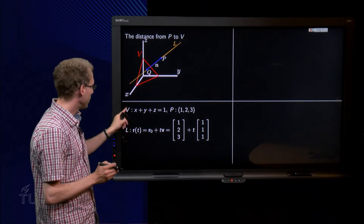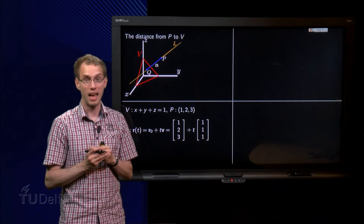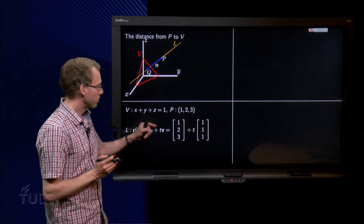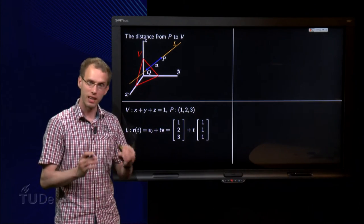So the normal is given by (1, 1, 1). So that's how we find the line L: R0 plus T times V, (1, 2, 3) plus T times (1, 1, 1). There we have our L.